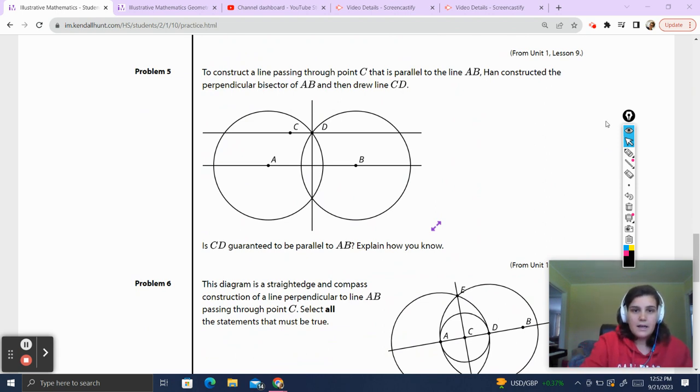To construct a line passing through point C that is parallel to line AB, Han constructed a perpendicular bisector of AB and then drew line CD. So we had AB, he's chilling over there. Han drew a perpendicular bisector, so let's draw our little box over there. We had point D, and then he drew a line like this. Is it parallel? Or the question is, is it guaranteed to be parallel?